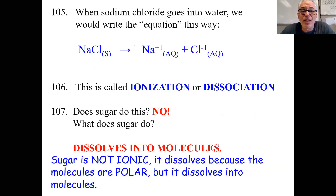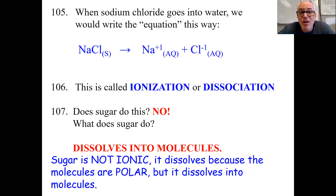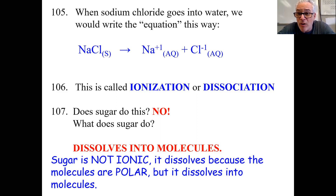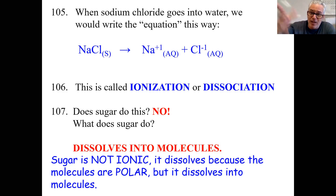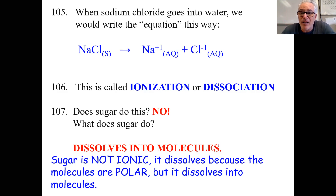Sodium chloride goes into water — when it goes into water, it forms ions: aqueous sodium ions and aqueous chloride ions. It has two different names: we call it ionization or it dissociated into the water. Does sugar do this? No — sugar dissolves into molecules. Sugar is not ionic. Now it is polar. Water's got a polar molecule and sugar's got a weird shape, so it's a polar molecule. Sugar dissolves very well. You put sugar in water, it becomes invisible. Sugar water looks the same as water — just sticky, tastes maybe better.